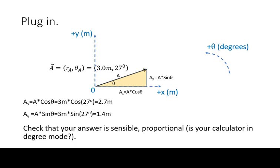In this example, remember that the size of each component must be less than the magnitude of the total vector. Both components are in the positive direction, and based on the geometry, the y component must be smaller than the x component.